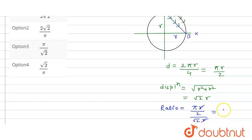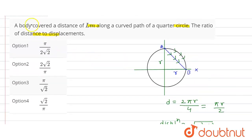So from here this will be π upon 2 root 2. Okay, so see the options. Option first is the correct option: π upon 2 root 2.